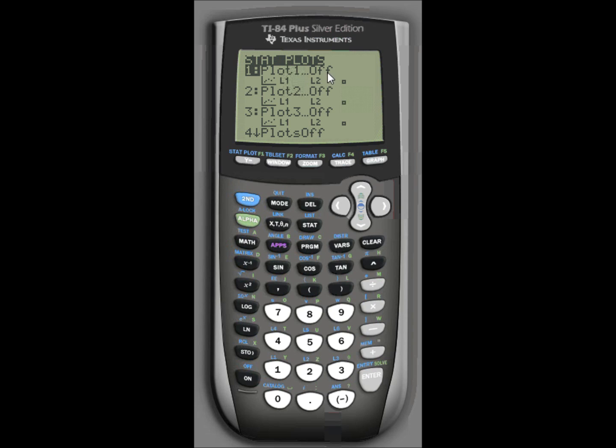Normally, that's what you'll leave it at. Once you've selected on, you press the zoom key, which is in the middle, and arrow down to zoom stat number nine. That will give you your scatter plot, which is basically the points plotted on the coordinate plane.